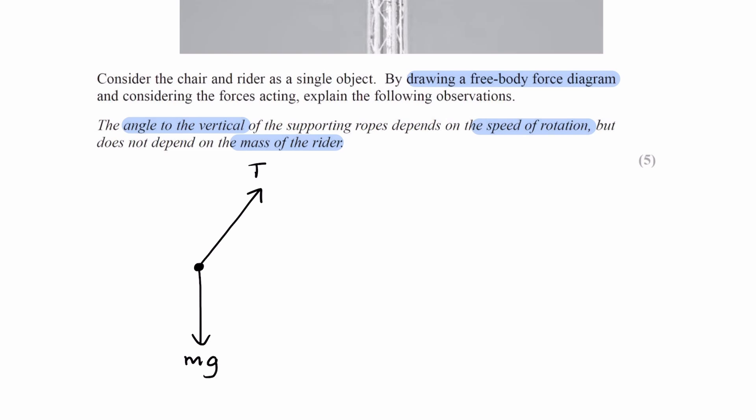We're considering the angle to the vertical, so I'll draw a line like this. This is theta. So in a scenario like this, where you have an object moving in a horizontal circle, and we have one of the forces at an angle, like we see here.